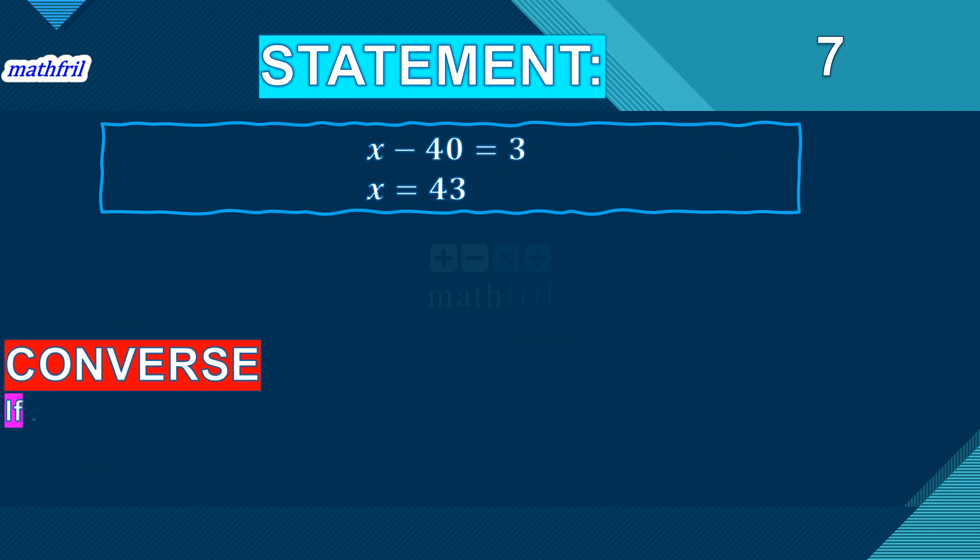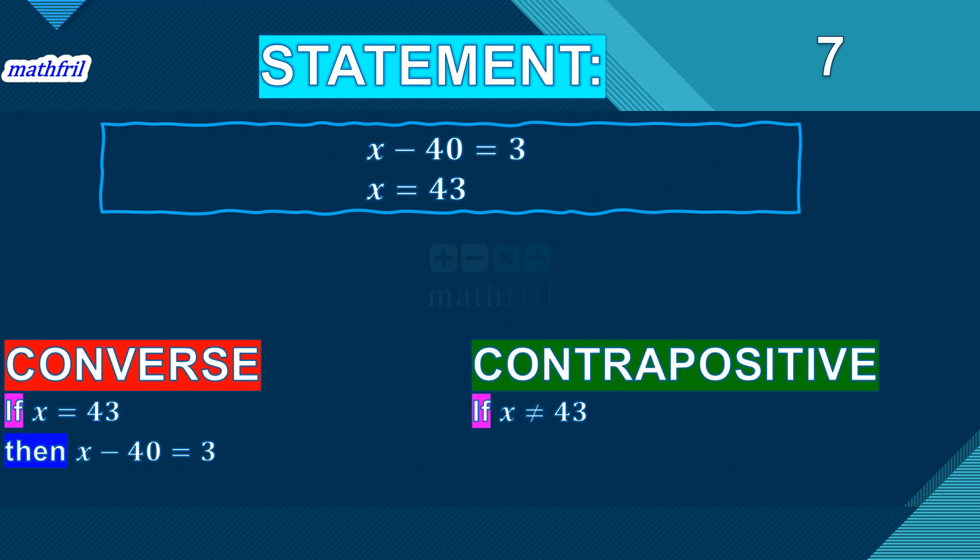But the wording is still the same. We just need to make it a negative number or the opposite in meaning. So same with this, we start with if x equals 43, then x minus 40 equals 3.